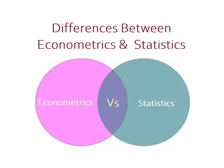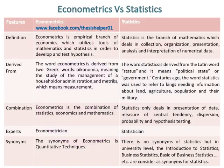The differences between econometrics and statistics: econometrics is the empirical branch of economics which utilizes tools of mathematics and statistics in order to develop and test hypotheses, while statistics is the branch of mathematics which deals in collection, organization, presentation, analysis, and interpretation of numerical data.